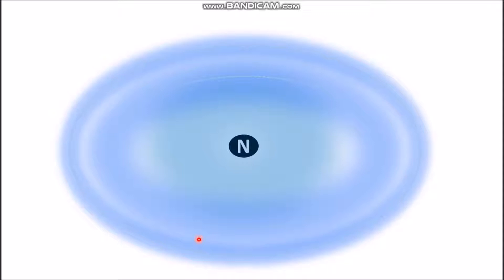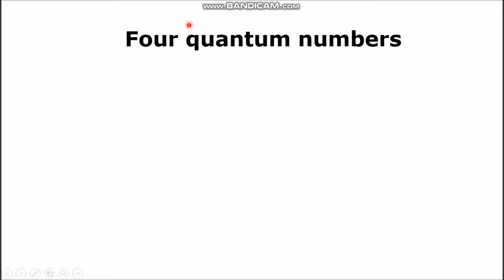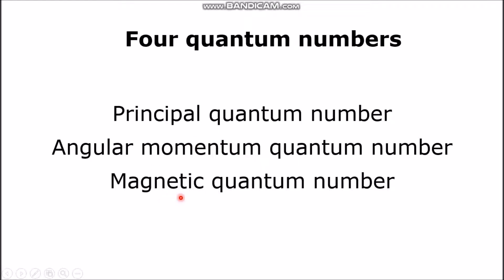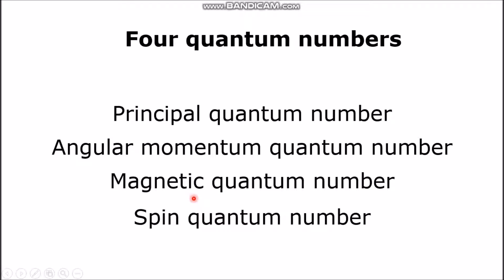However, it is highly probable to find the electron closer to the nucleus of the atom. Now I will talk about the four key quantum numbers used to describe the orbitals. These numbers are the principal, the angular momentum, the magnetic, and the spin quantum numbers respectively.